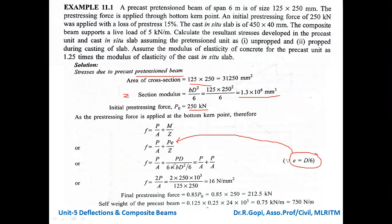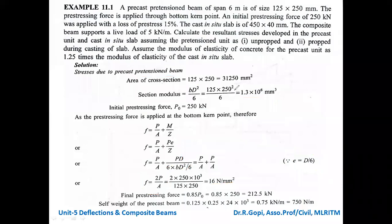Simplifying P/A + P/A gives 2P/A. Substituting values: 2 × 250 × 10³ / (125 × 250) = 16 N/mm². This is the initial prestress. The initial prestressing force is 250 kN, and the cast in-situ slab grade is less while the prestressed beam concrete grade is more.